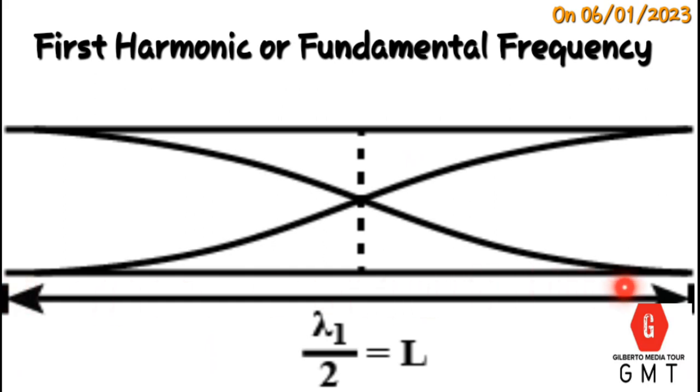For first harmonic or fundamental frequency, the length of a tube in terms of wavelength equals to the wavelength of a tube. It means that if the tube for fundamental frequency is doubled, its length must be equal to the wavelength.